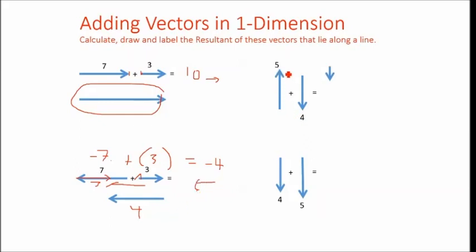Up here, five up and four down. If we take the five and move the tail to the head there and draw the five, we can see that our vector that's left over is just that much there. You've got five up plus four down, which is a negative four, leaves us with one upward.